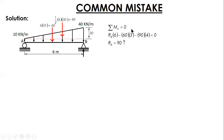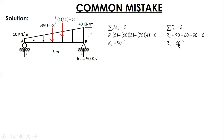Assuming counterclockwise positive, we get RB equal to 90. Next, summing forces along the vertical, RA equals 60.